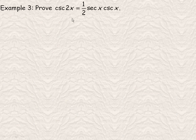In example 3, we're asked to prove that csc 2x = 1/2 sec x csc x. And I'm going to start with the cosecant 2x, although this seems to be the larger and more complicated side, because there's a 2x here and we'll use identities to change it so there's no longer a 2x.